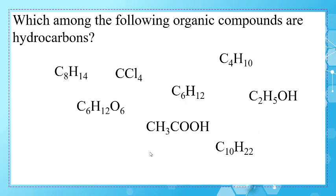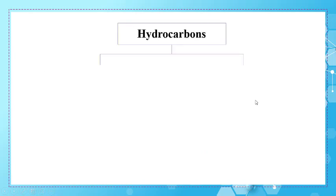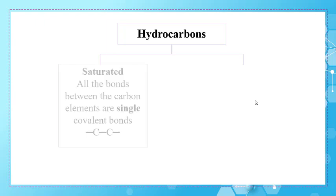Which of the following organic compounds are hydrocarbons? Pause the video and try to solve this question. We said that hydrocarbons are organic compounds made up of carbon and hydrogen only. The first molecule is a hydrocarbon. The second has chlorine without hydrogen, so it's not a hydrocarbon. The third and fourth are hydrocarbons since they contain carbon and hydrogen only. The last ones are not hydrocarbons since they contain oxygen beside hydrogen and carbon.